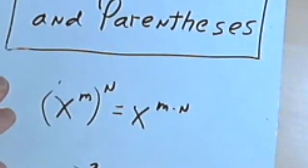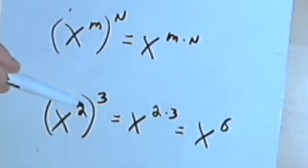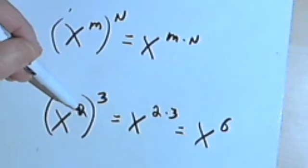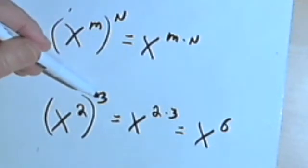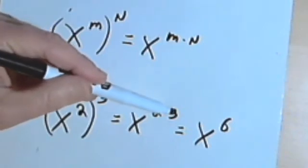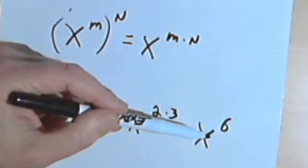Let's do this with some real numbers. I've got x squared raised to the third power. What that means is I'm going to multiply the two exponents, so I'm going to have x raised to the 2 times 3. 2 times 3 is 6, so that means I have x to the 6th.